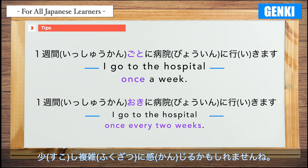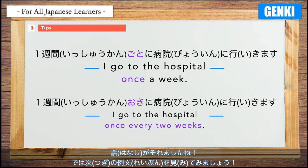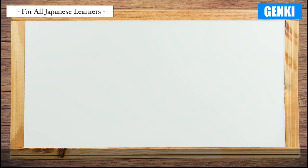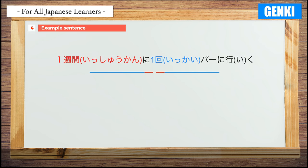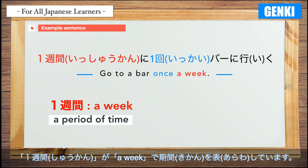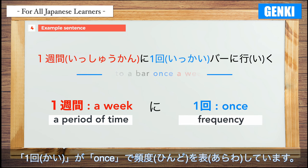It may seem a little complicated, but of course you don't have to use them perfectly — it wouldn't hurt to know this information. Now, let's look at the next example sentence. Example 4: 1週間に1回バーに行く — Go to a bar once a week. The word 1週間 (a week) indicates a period of time, and 1回 (once) is used to indicate frequency.